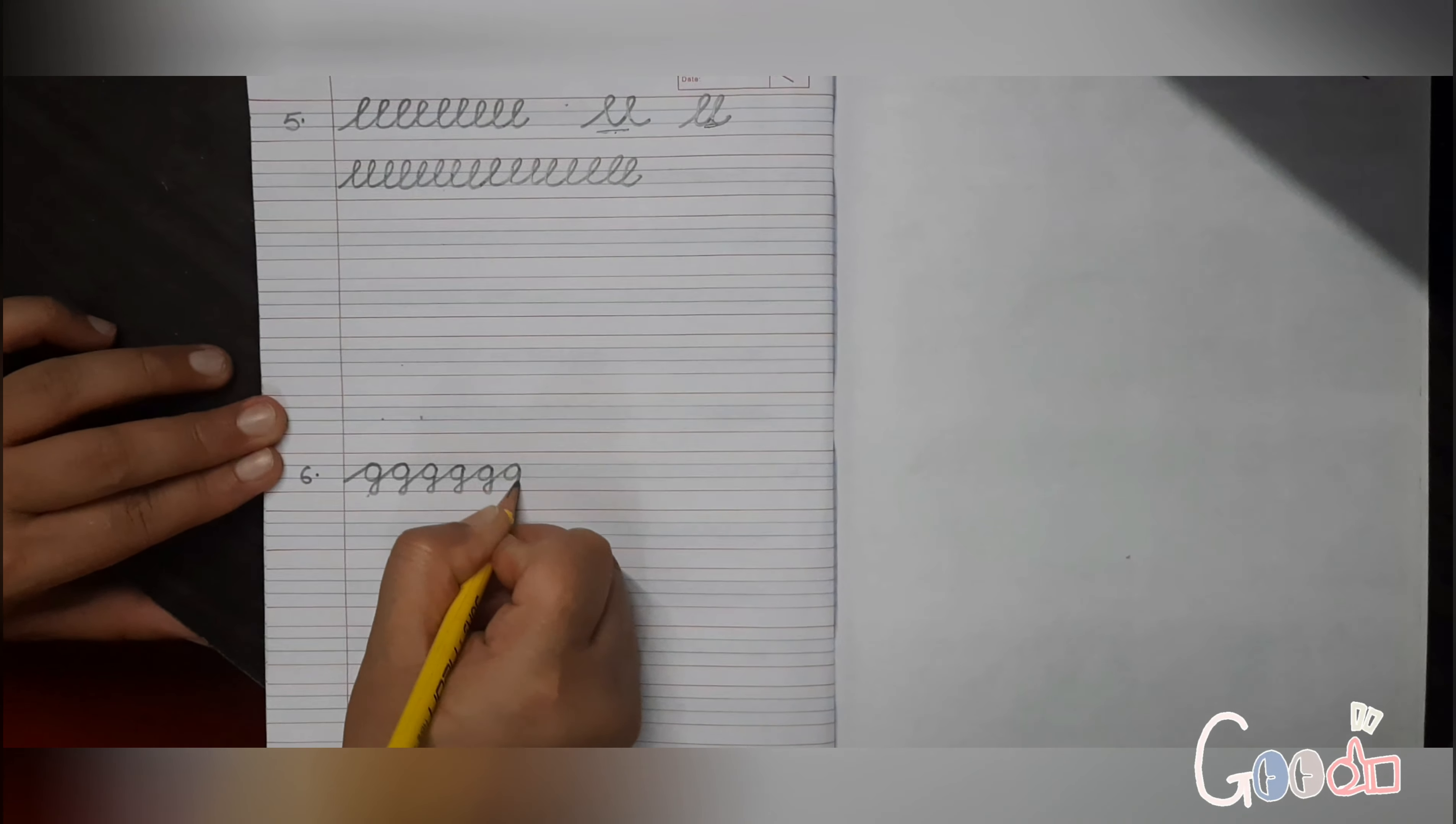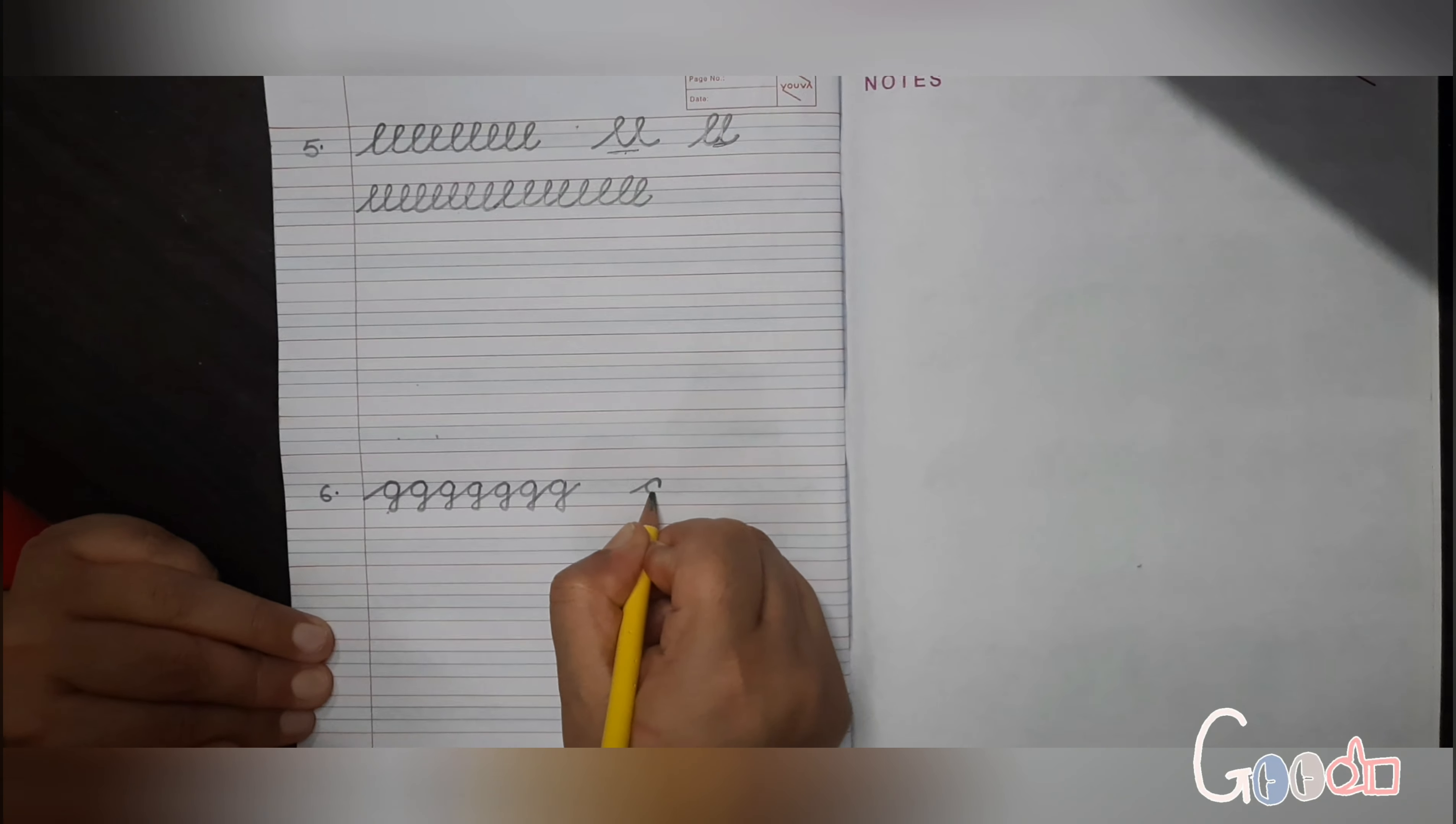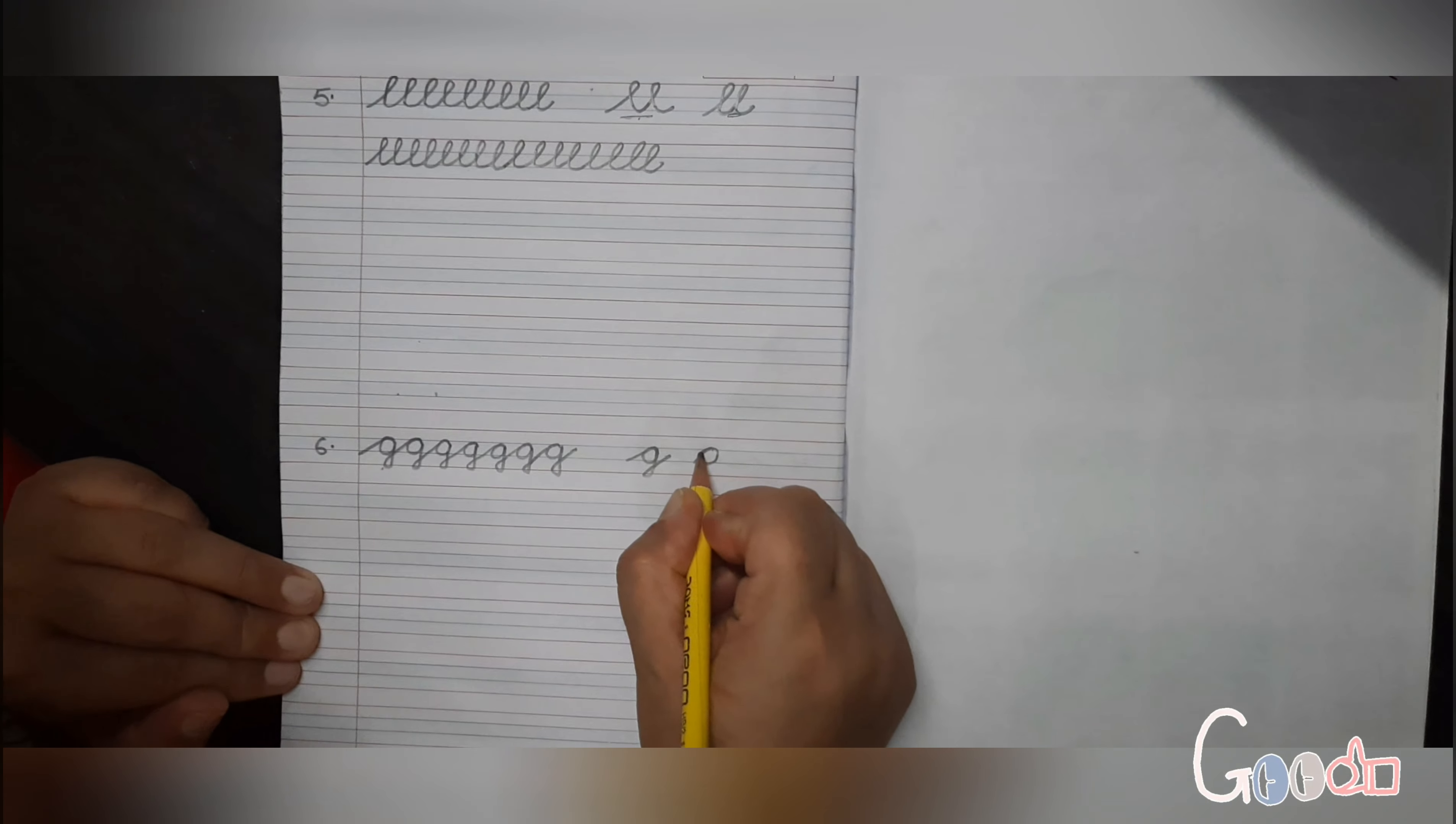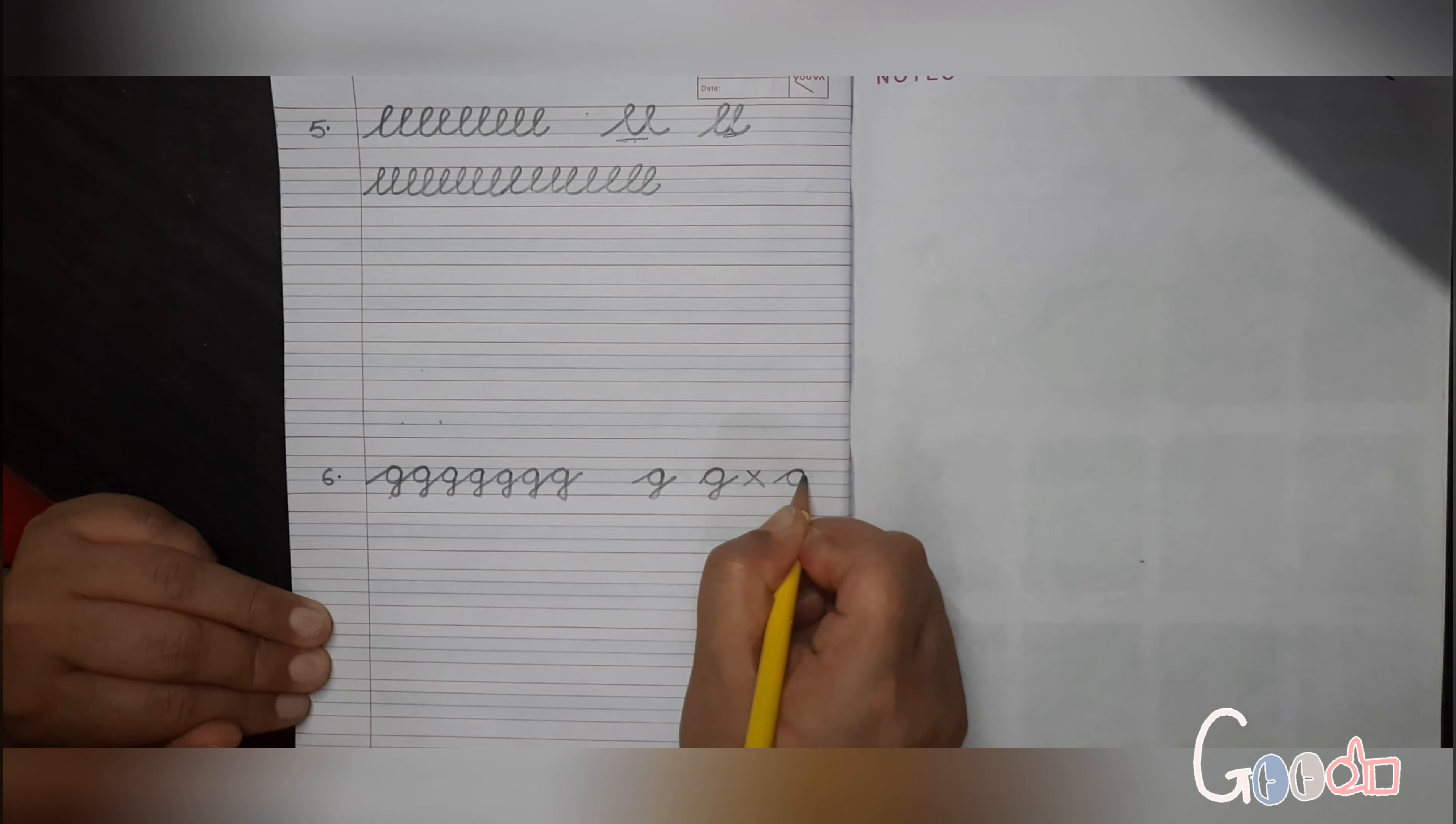Now the mistake which you people will do is you don't take this bend till here. What you do is you just take a turn from here, then you go back here, then you bring it here. This is wrong. The more you take this bend, the easier it will be to make G.